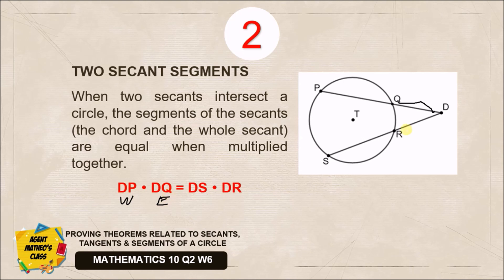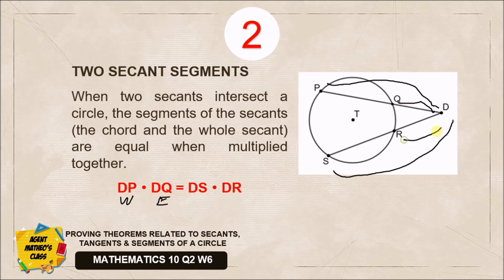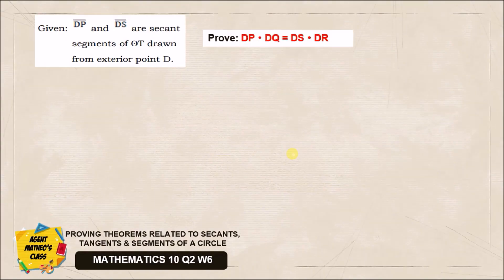Again, the product of the whole part DP multiplied by the external part DQ is to be equated to the other secant. The second segment DS multiplied by its external segment DR — so the product of the whole and external part of one secant equals the product of the whole and external part of the other secant. We will prove this using a two-column proof.